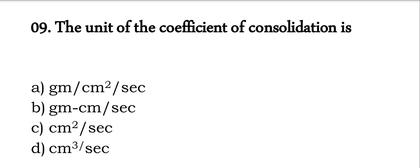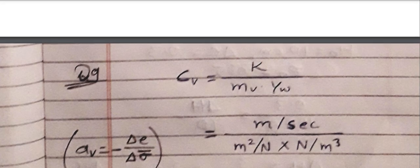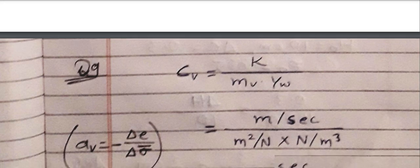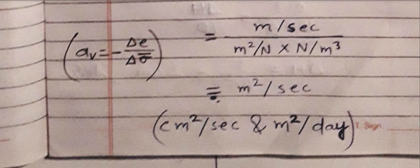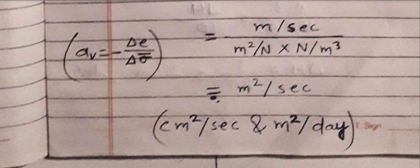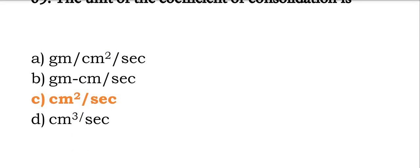The unit of coefficient of consolidation: coefficient of consolidation is nothing but K divided by Mv times gamma w. K unit is meter per second, Mv is delta e by delta sigma where delta e unit is meters, sigma is newton per meter square, and gamma w is newton per meter cube. You can cancel out to get meter square per second. The correct option is centimeter square per second, so option C is correct.